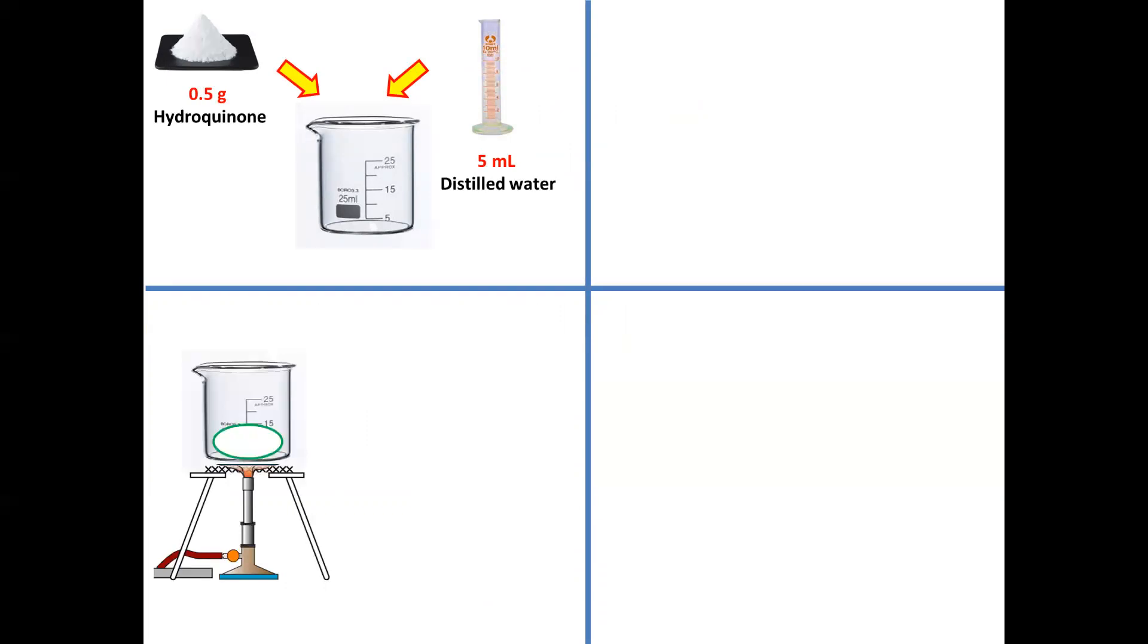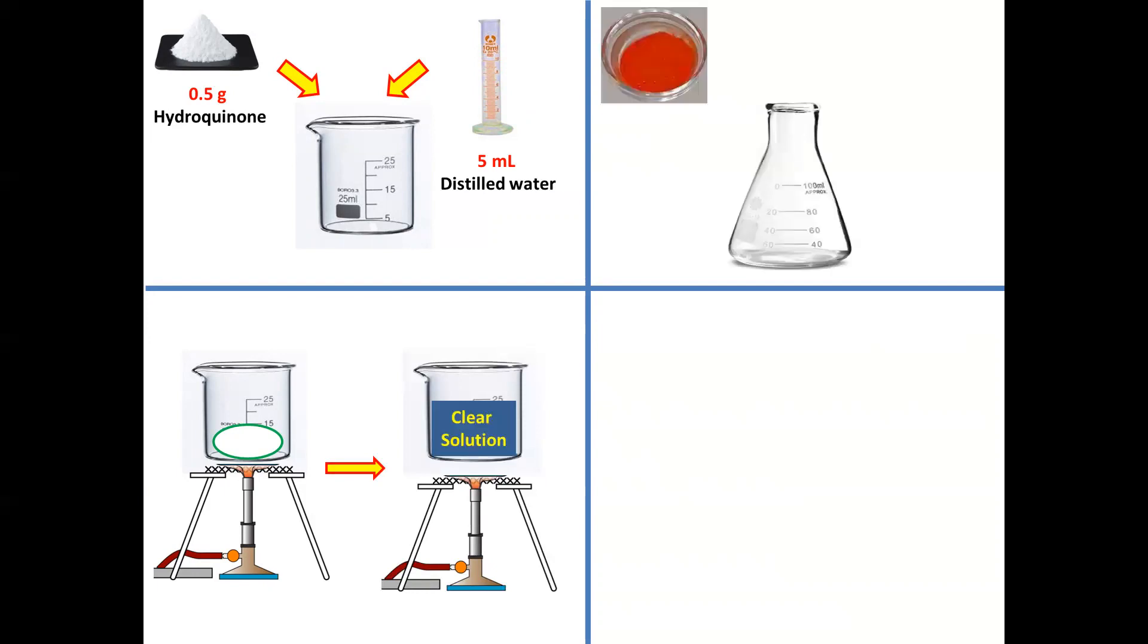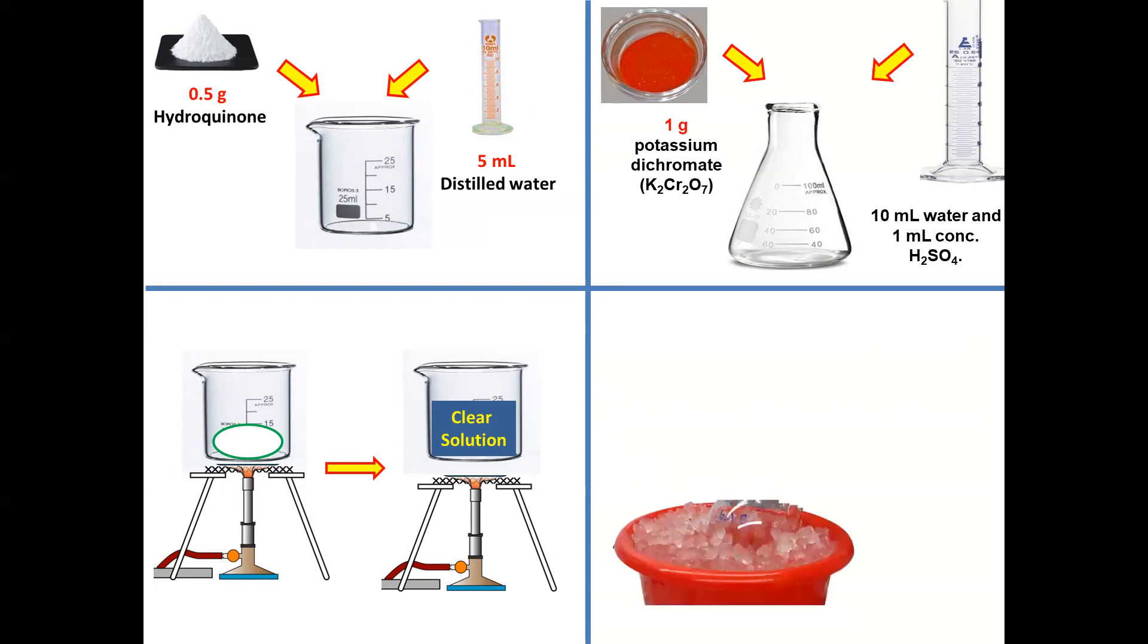Now heat the beaker on a wire gauze to obtain a clear solution. Now add 1g potassium dichromate in the conical flask.